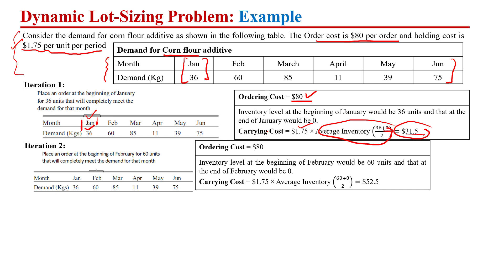Similarly, to calculate the total cost for February, at the start of February we are ordering equal to the demand of 60. There is an order cost, and then we find the average inventory. We have zero inventory at the start of February because all quantity ordered in January was consumed by the end of that month. So: (0 + 60) / 2 × $1.75 gives the carrying cost for February. Again, $80 plus this carrying cost is the total cost for February.